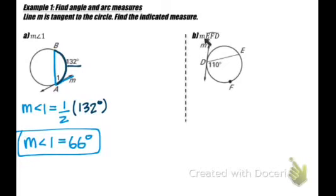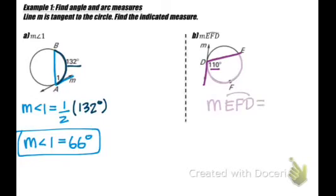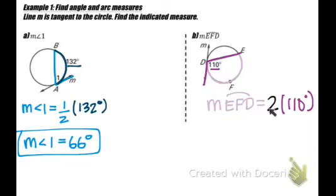For part B, we want to find the measurement of arc EFD. We're given the angle that the tangent line and chord form, which is 110 degrees. Since the angle is always half the intercepted arc, we work backwards: arc EFD equals 2 times 110, which is 220 degrees.